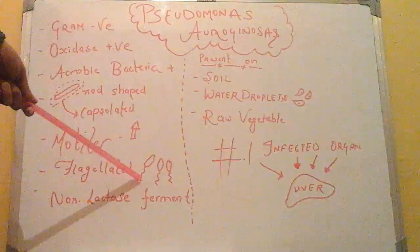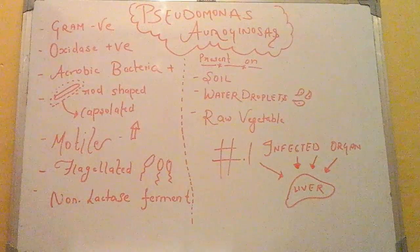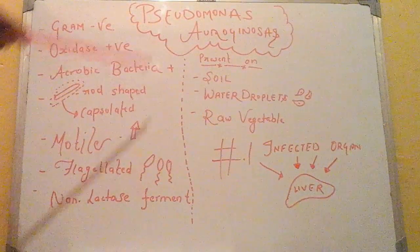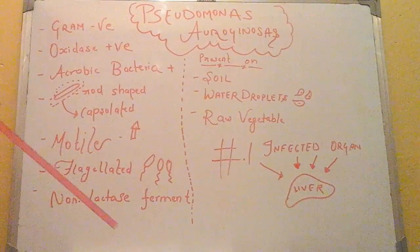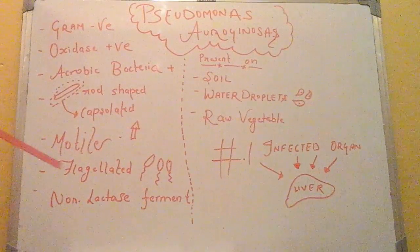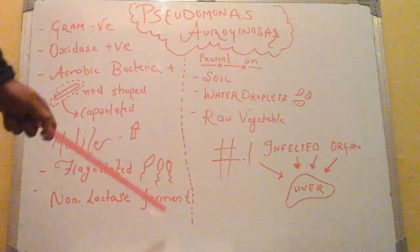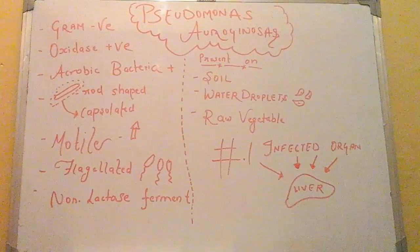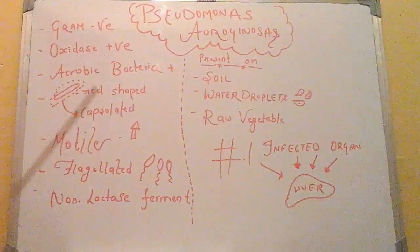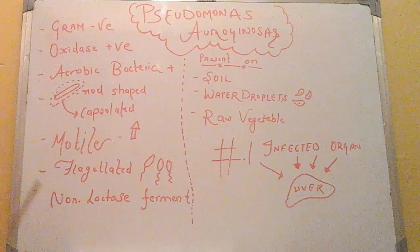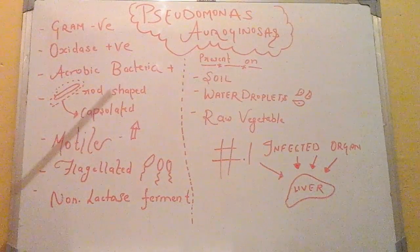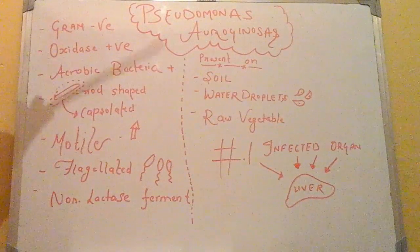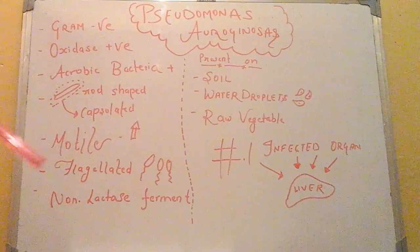Here we can see the flagellum. Apart from this, this is the most important thing which discriminates Pseudomonas aeruginosa from other classifications. It is a non-lactose fermenter. And basically, if we are going to diagnose it, a blue pigment on the cetrimide agar is present, so we can detect the presence of Pseudomonas aeruginosa.